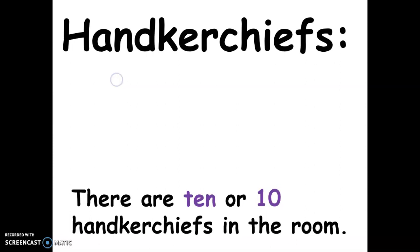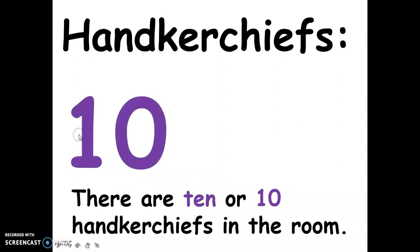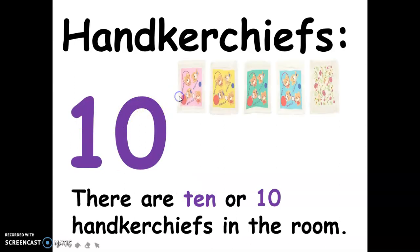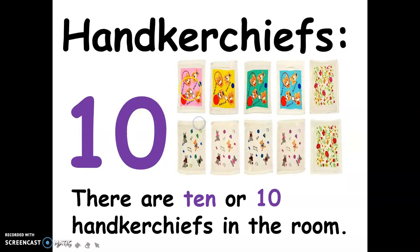And then, handkerchiefs — there are ten handkerchiefs in the room. This is the spelling of ten, and this is the numerical symbol for ten. And these are the ten handkerchiefs: one, two, three, four, five, six, seven, eight, nine, ten.